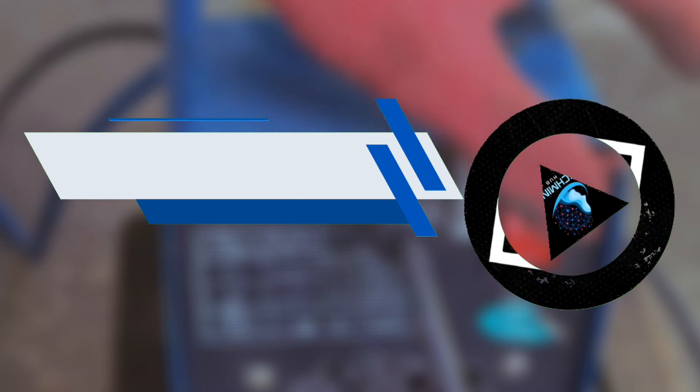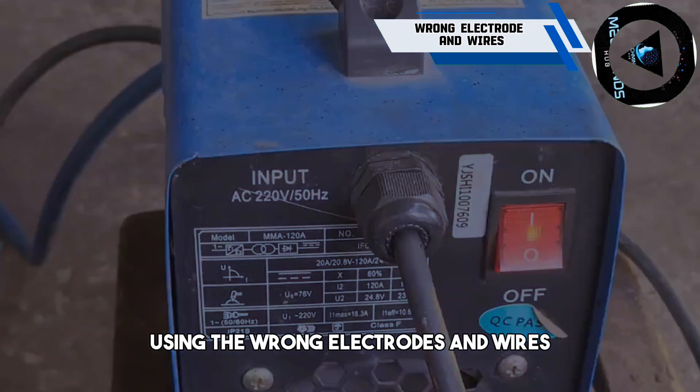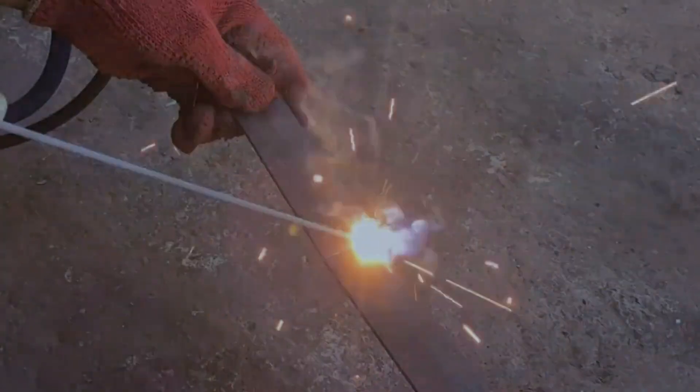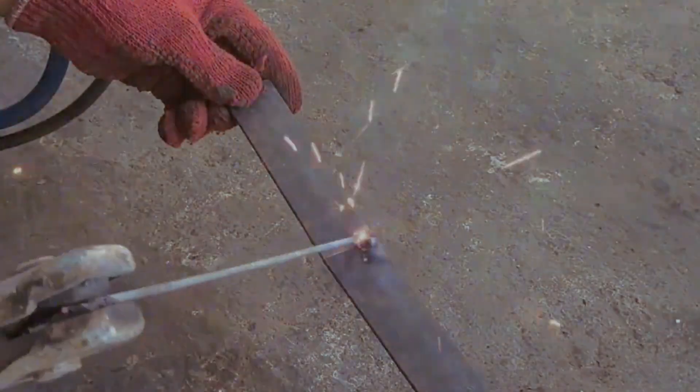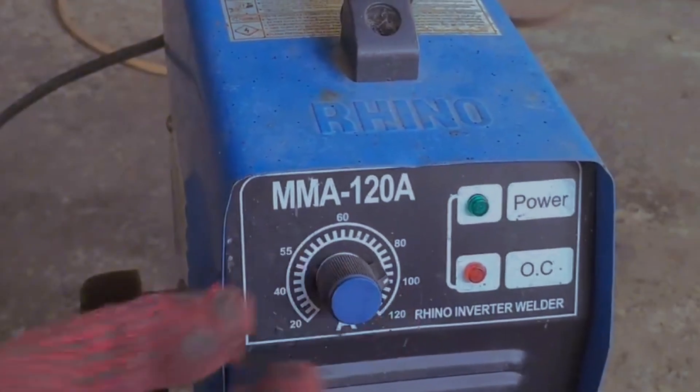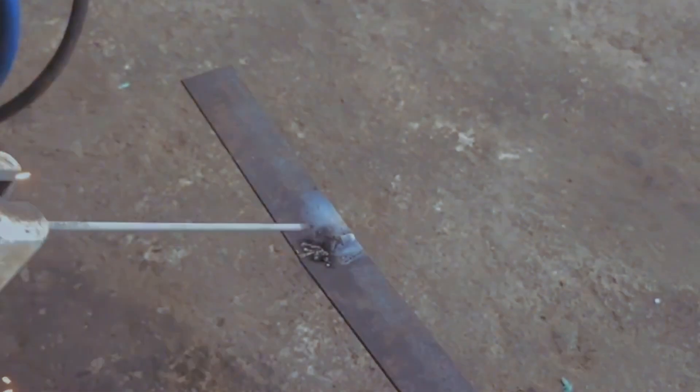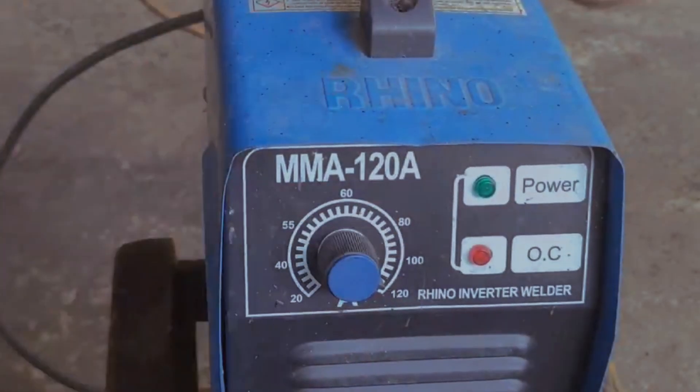One of the common mistakes that can ruin the welding project is using the wrong electrodes and wires. These are the materials that create the electric arc and the filler metal for your weld. If using the wrong ones, you might face a lot of problems, such as excessive spatter, burn through, poor penetration, cracking, or weak joints.